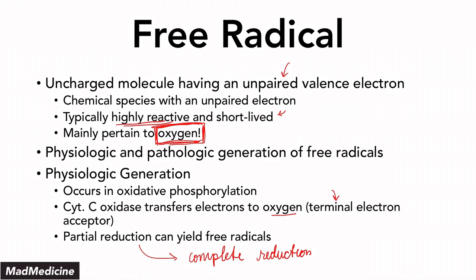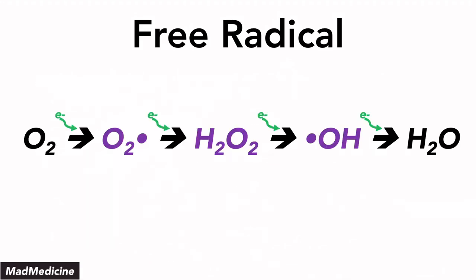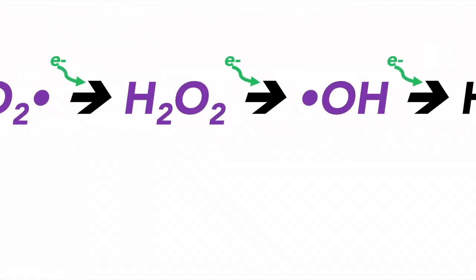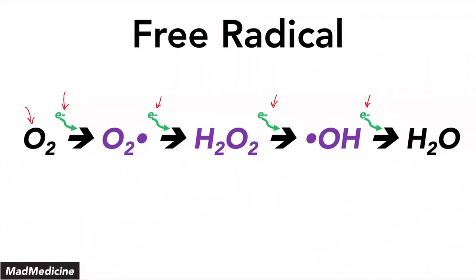A complete reduction is actually going to generate water, H₂O. So starting off with oxygen, once oxygen accepts one free electron, it's going to become an oxygen free radical. Then it's going to continuously accept electrons. The second free electron is going to form hydrogen peroxide. The third free electron is going to form the hydroxide free radical. And the fourth free electron is going to form H₂O — that is your complete reduction.